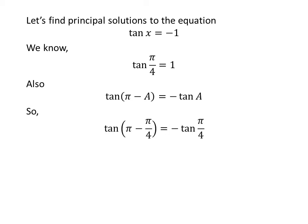Applying the above identity, tangent of pi minus pi upon 4 is equal to minus tangent of pi upon 4. Since pi minus pi upon 4 equals 3 times pi upon 4, and plugging in the value of tangent of pi upon 4 gives us tangent of 3 times pi upon 4 is equal to minus 1.